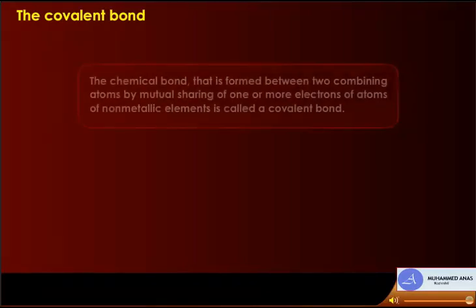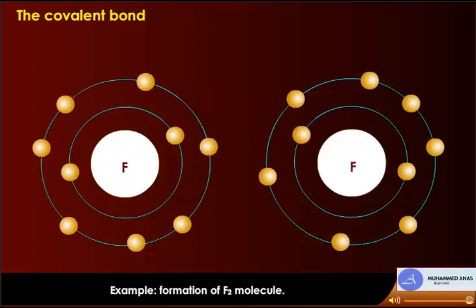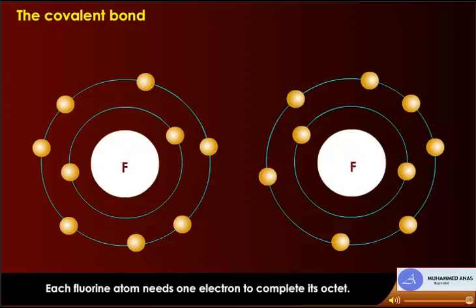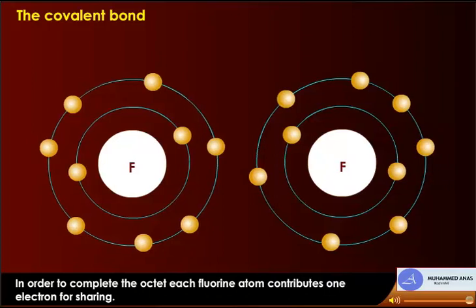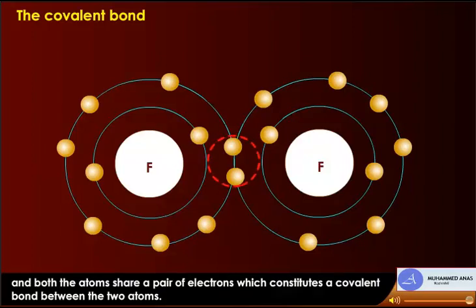The covalent bond is the chemical bond formed between two combining atoms by mutual sharing of one or more electrons of non-metallic elements. For example, in the formation of the F2 molecule, fluorine has the electronic configuration 2-7 with seven electrons in its valence shell. Each fluorine atom needs one electron to complete its octet, so each contributes one electron for sharing, constituting a covalent bond.